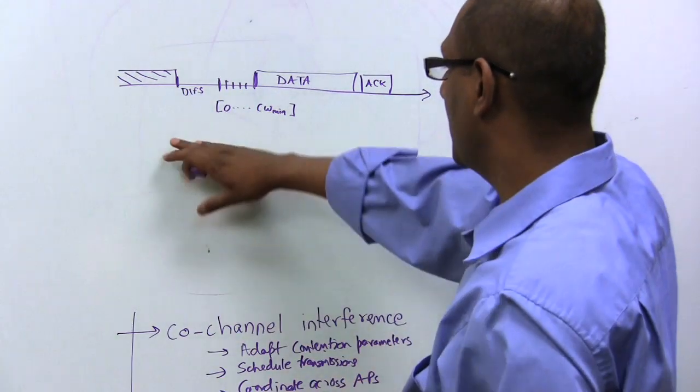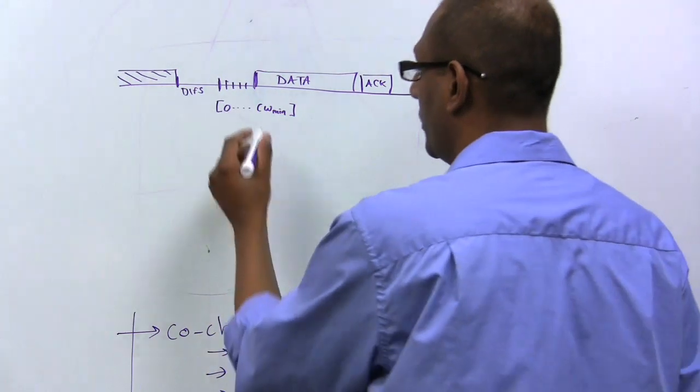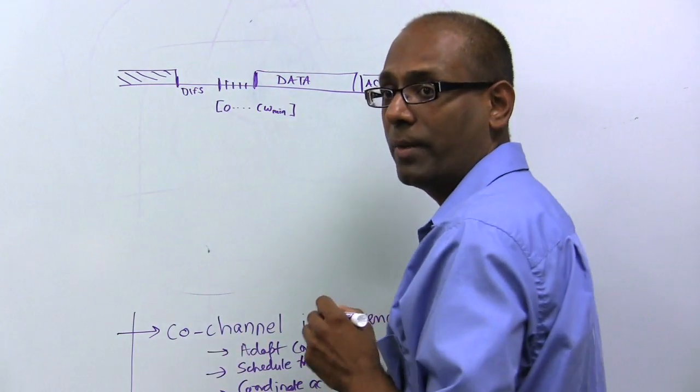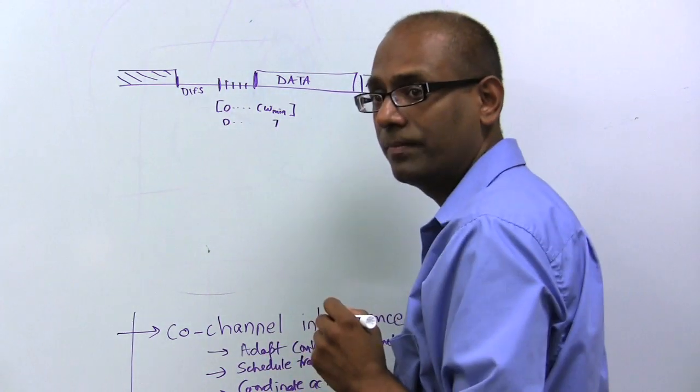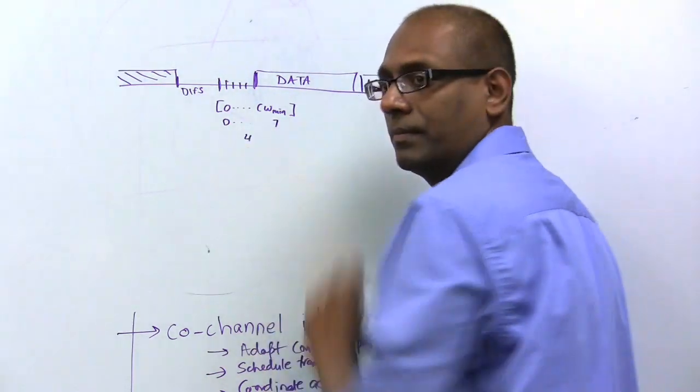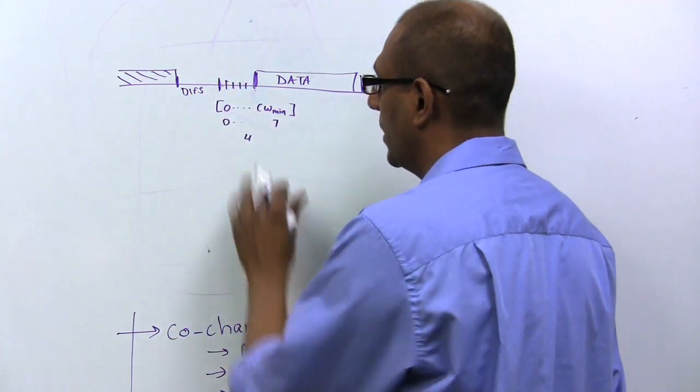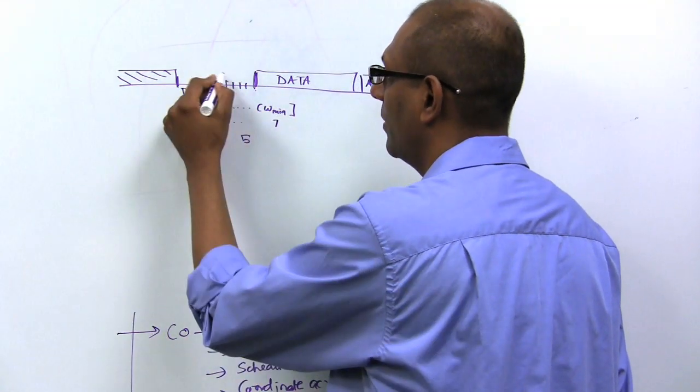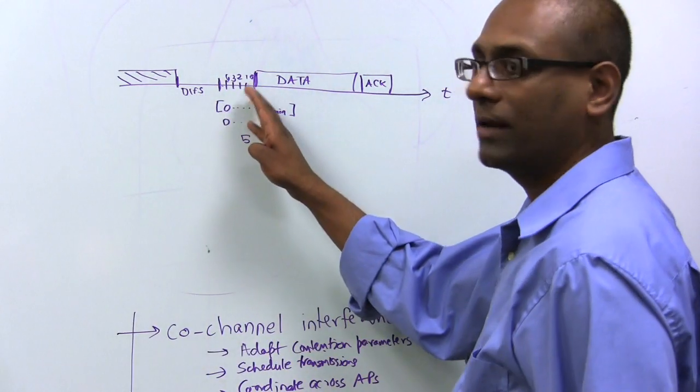So again, the basic idea here is, you wait for some amount of time, you pick some value, a randomized value, between zero and some contention window max, and let's just take some actual numbers. You pick, let's say, between zero and seven. Let's say you pick four. So in this particular case, you will count down four slots. Well, I picked five here. So I picked five, four, three, two, one, zero.